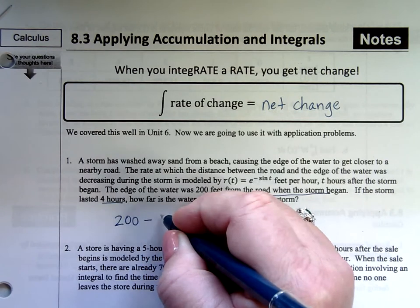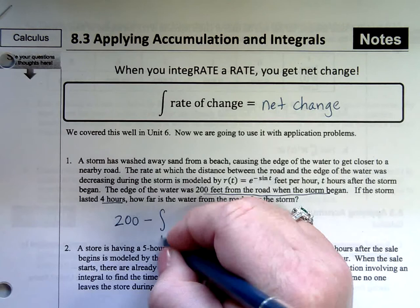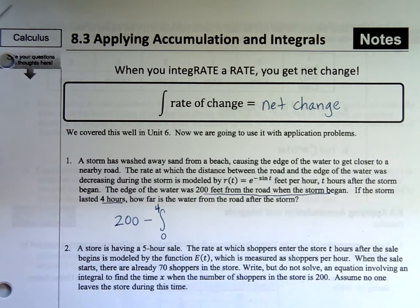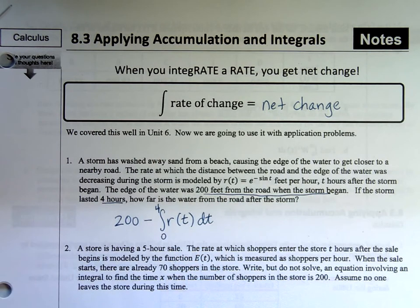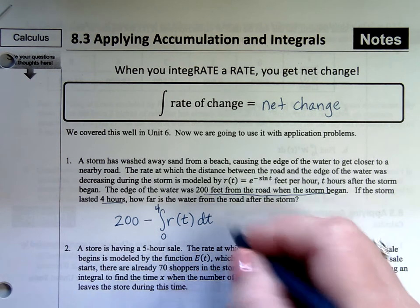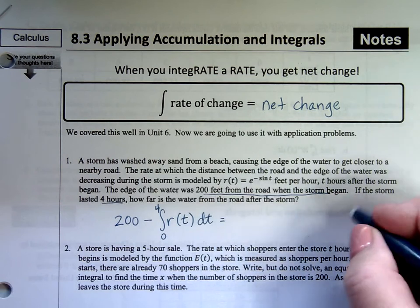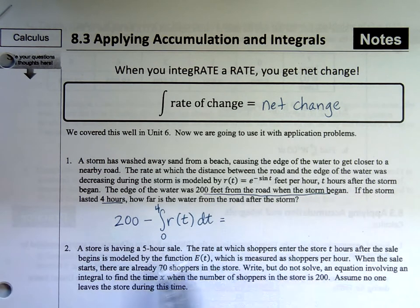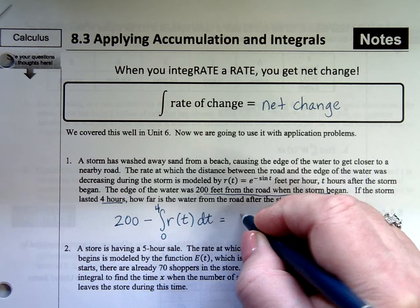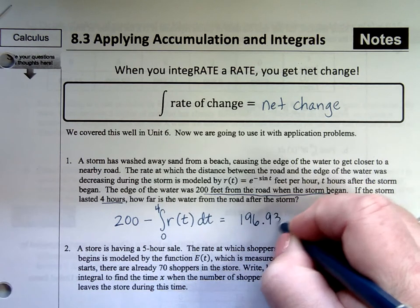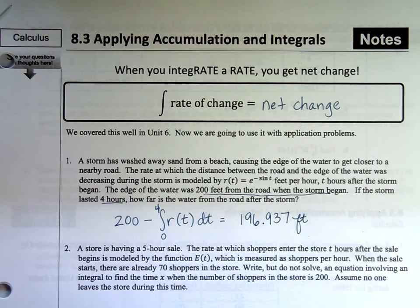Well, you know where it started - 200 feet from the road. That was the initial position of the sand. Then the storm washed away, so minus. It washed away over a four-hour period at a rate of r of t dt. You go to your handy-dandy calculator and calculate it out. You get 196.937 feet. These usually have units with them, so make sure you put units.